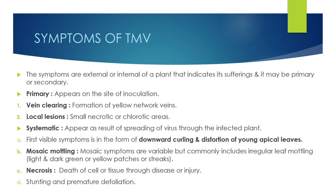Primary symptoms appear on the site of inoculation as a result of a local reaction, and disappear as the disease spreads. There are two primary symptoms: vein clearing and local lesions. In vein clearing, there is the formation of a yellow network. In local lesions, there are small necrotic areas.